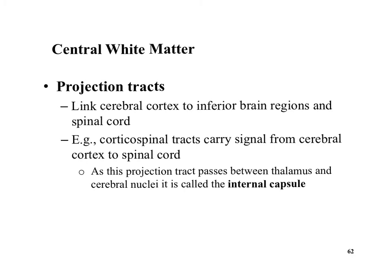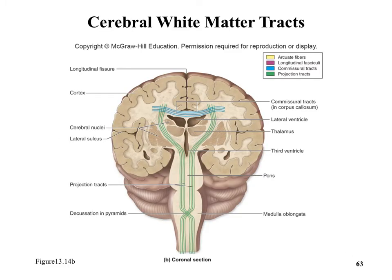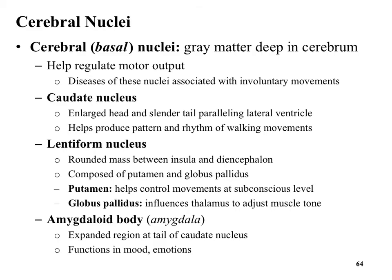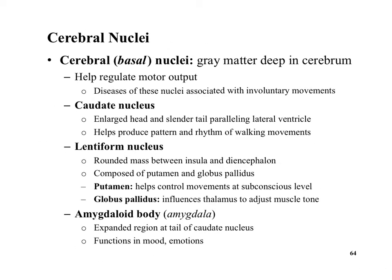Projection tracks go back to front, linking the brain to the spinal cord. Notably, these tracks cross over. When you want to move your right hand, the left side of the brain is working — the left motor cortex — and that crossover occurs within the brain stem prior to the spinal cord.